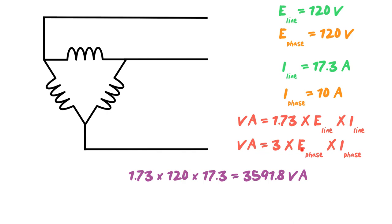So let's use this formula. The VA is equal to three times E phase times I phase. So let's take three times 120 times 10, gets you 3,600 VA.